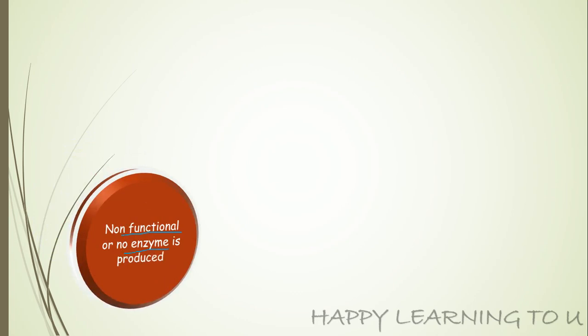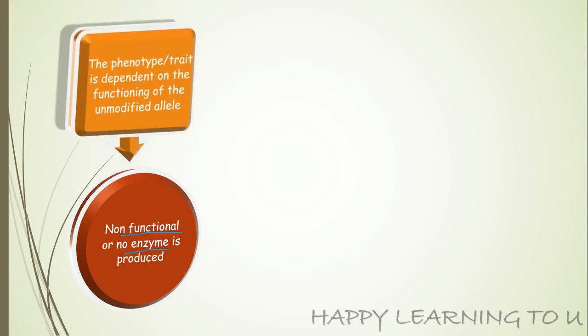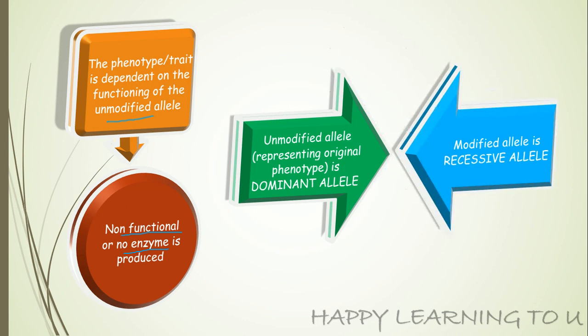In case the modified allele produces a non-functional enzyme or does not produce an enzyme at all, the phenotype or the trait is dependent solely on the functioning of the unmodified, that is, the normal allele. In such a case, this unmodified or normal allele becomes the dominant allele, and the modified allele becomes the recessive allele.